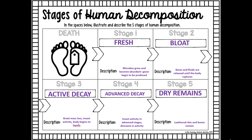The final stage is dry remains, where the skin becomes leathered and only bones remain. There is no set time frame for this process because it depends on many environmental factors. When we get into entomology, we will talk about how investigators can use insect activity at these different stages to help determine a time of death. This ends our human decomposition and death lesson, and the next lesson will cover time of death.